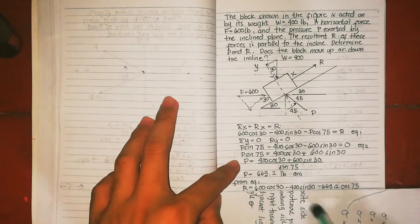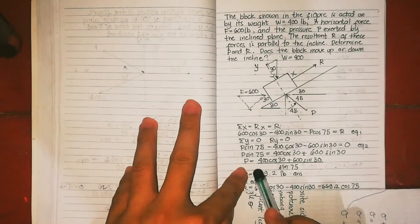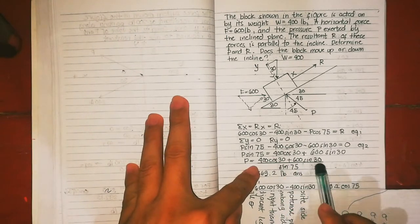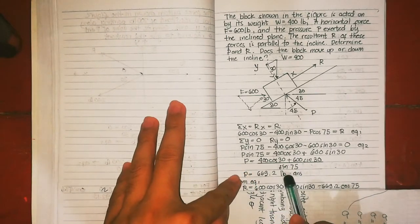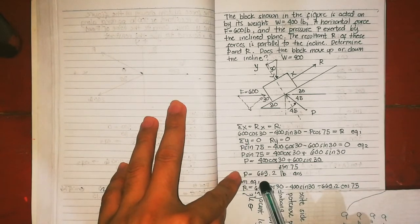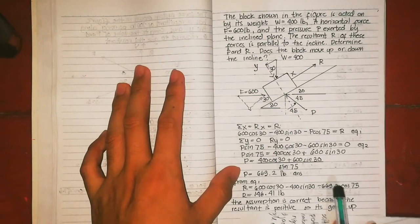Let's equate for P. This is basic now. P equals 400 cos 30 plus 600 sin 30 over sin 75, so P equals 669.2 pounds. We now have P.